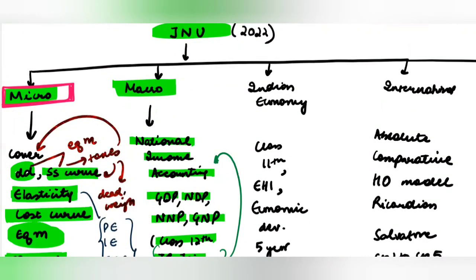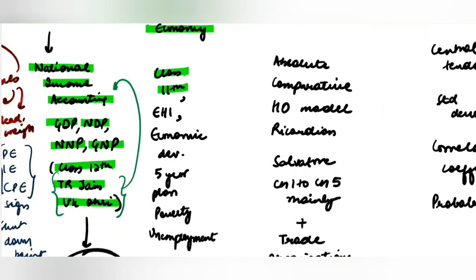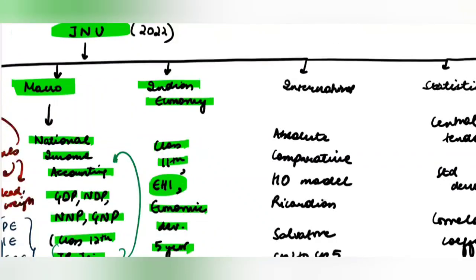The third subject that you should be covering is Indian economics. You can go through class 11 Indian economics. Other than that, you should know some economic history, economic development, some five-year plans, poverty, different ways to calculate poverty, and unemployment patterns in India.